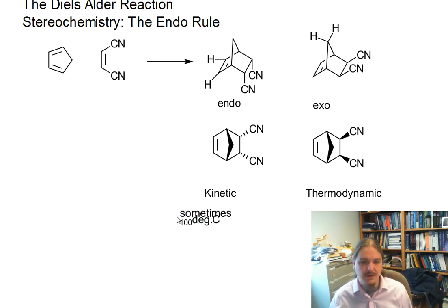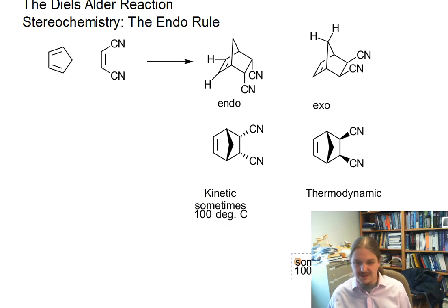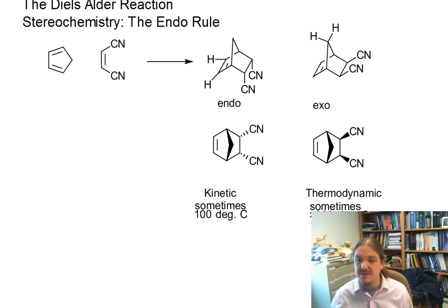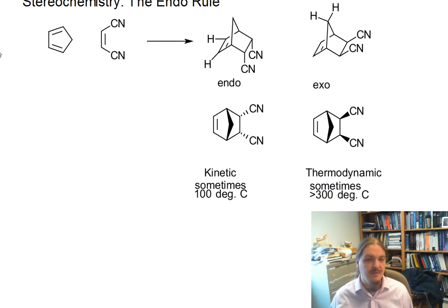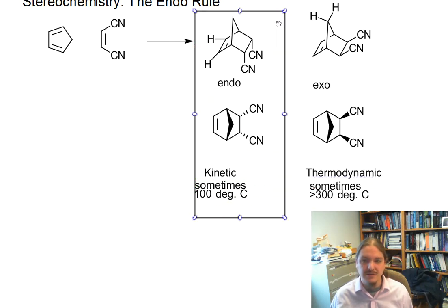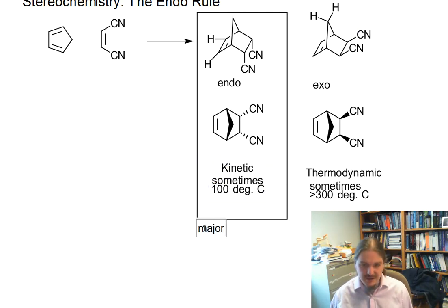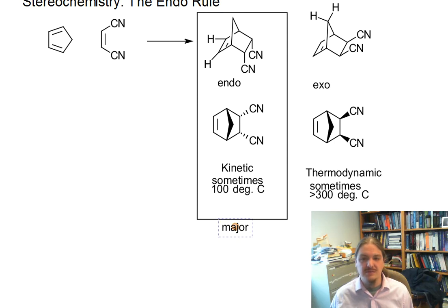Sometimes the kinetic product occurs around 100 degrees Celsius. The thermodynamic product requires greater than 200 or 300 degrees Celsius. So for all practical purposes, we generally think about the endo product as the major product, because the conditions required to reach the thermodynamic product are sort of outrageous.